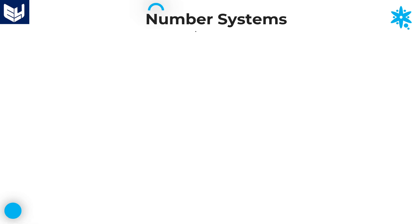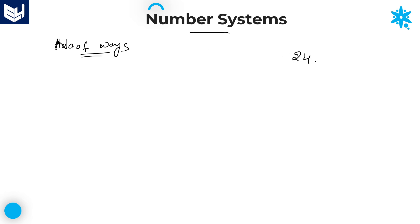Hi everyone, welcome to the session. In this session I am going to explain about the topic number systems. We are going to discuss the concept of number of ways — how you can calculate the number of ways for any number. Basically, the question is asked as: in how many ways can you represent, or express, the number 24 as a product of two factors?